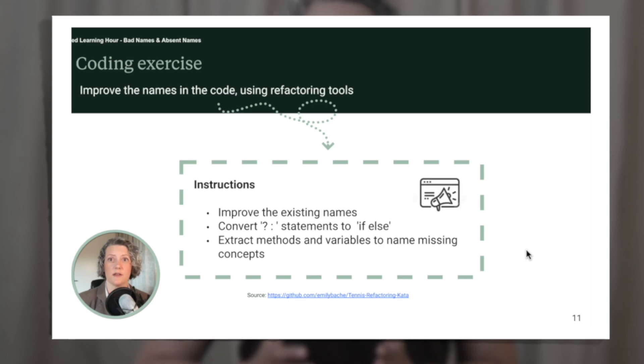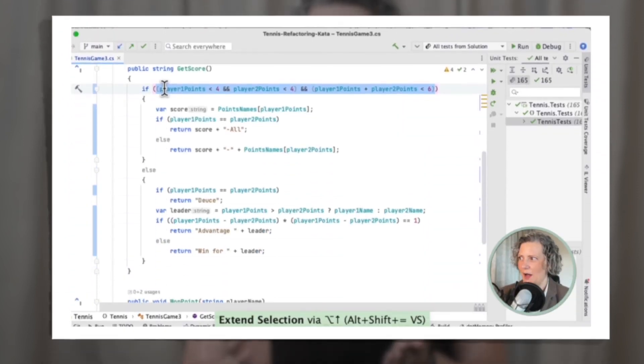For the Concrete Practice part of the learning hour, usually we'll be doing a coding exercise. All the source code is available open source with a generous license and you can download it beforehand. There will be links in the session description. You'll need everyone in the team to be able to get the coding exercise up and running in their development environment quickly. That could mean putting it in your organization's version control repository and making sure any dependencies are downloaded. You want to make sure it will build straight away when people clone it onto their machines.